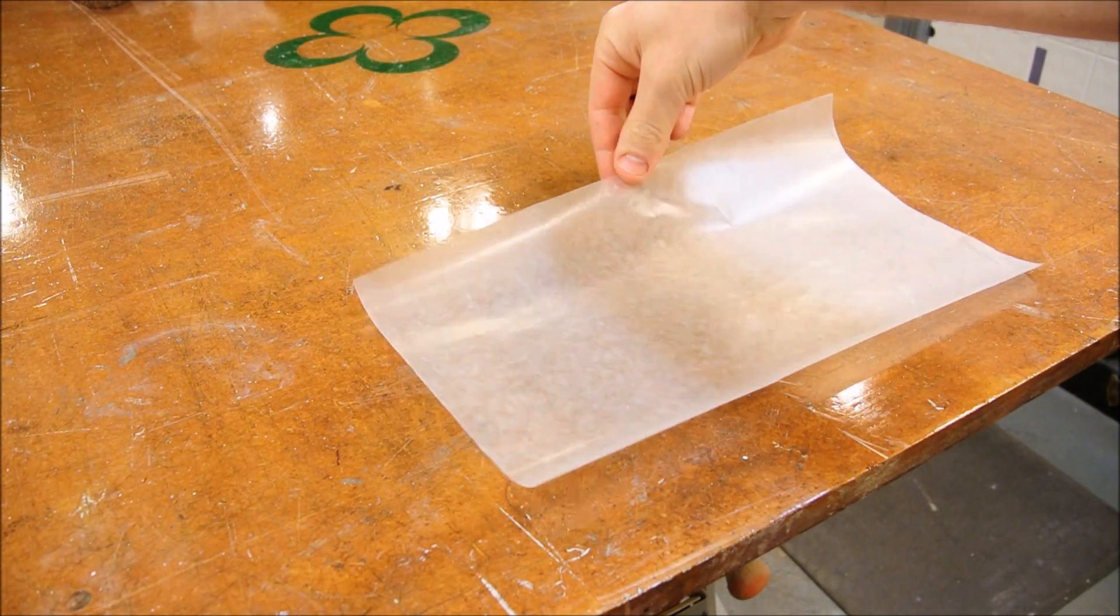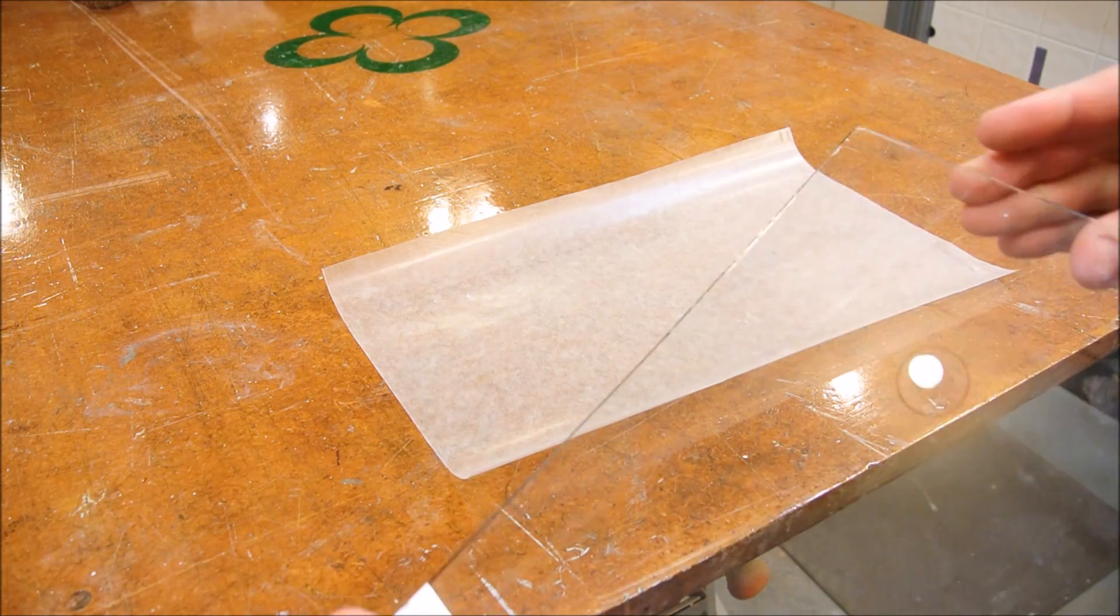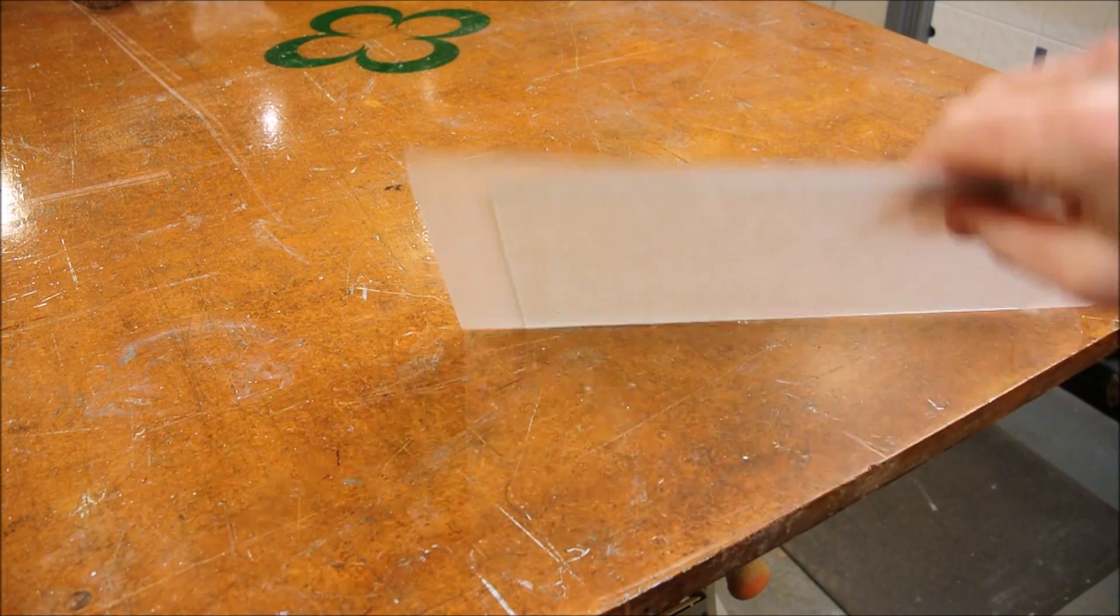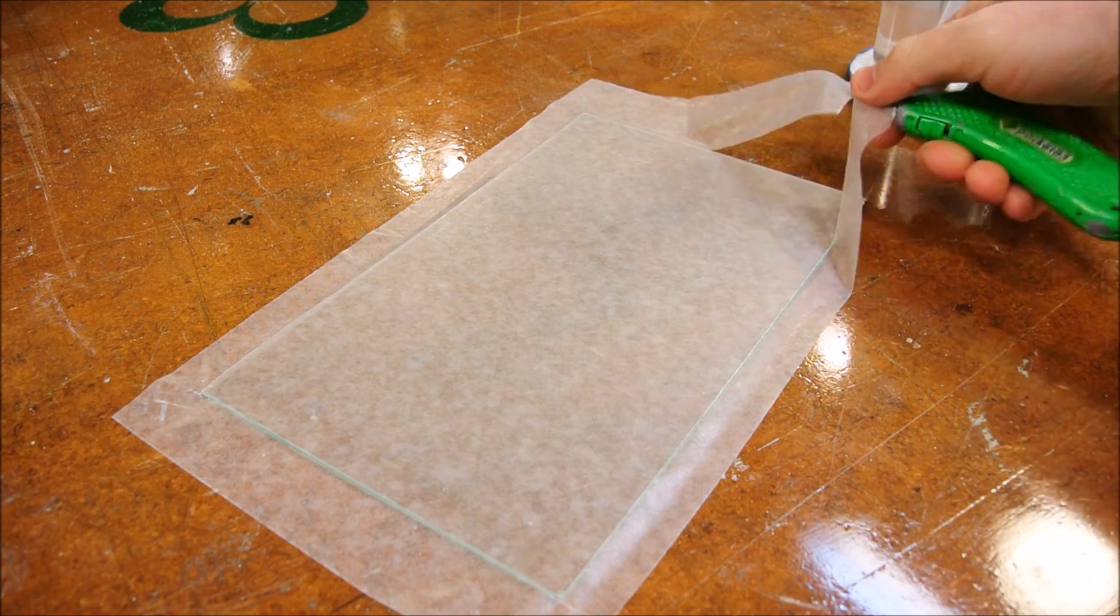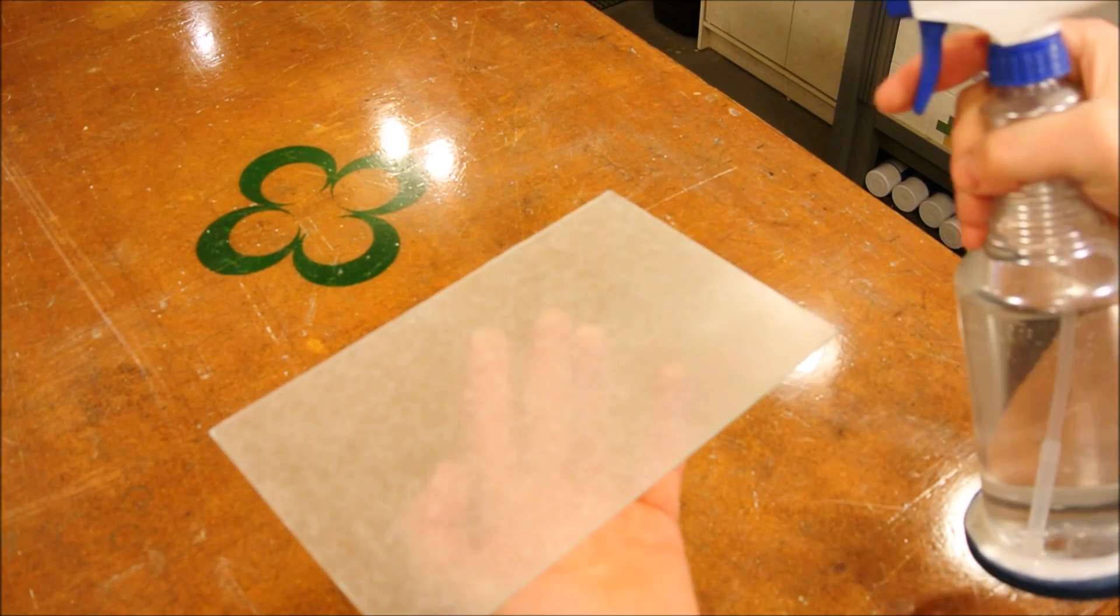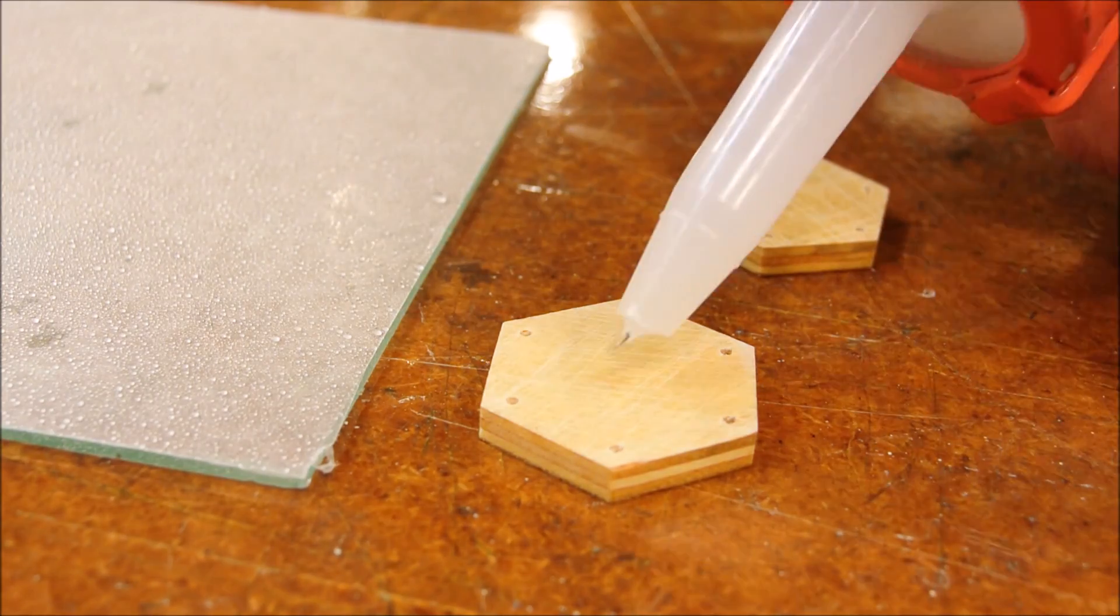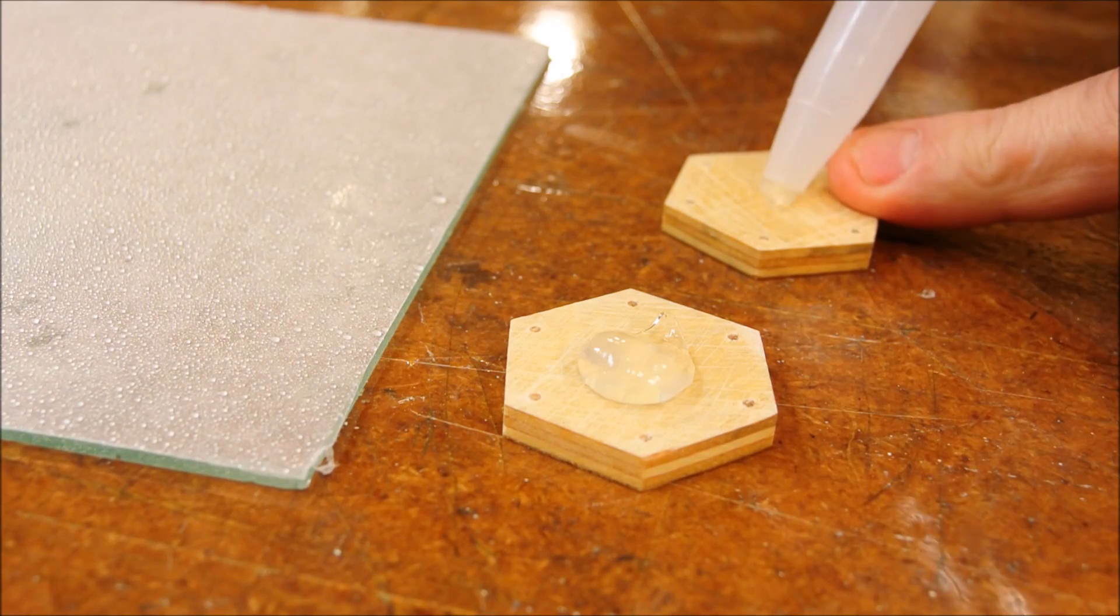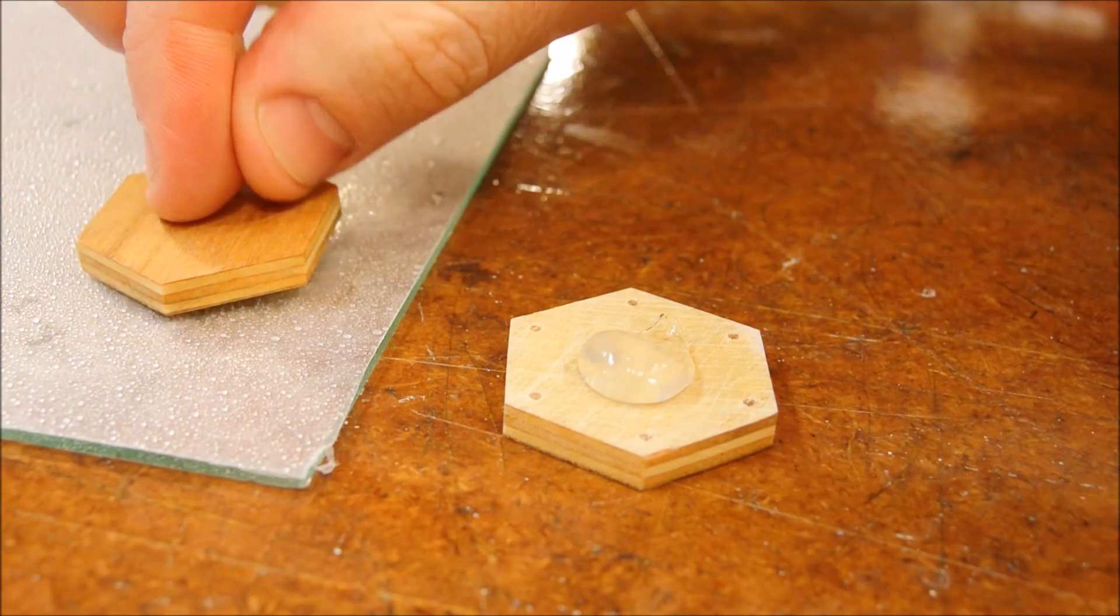Okay, next step. I've prepared a piece of wax paper by lightly coating one side with spray adhesive. And this is a piece of very thin glass. Now, I'm just lightly misting the surface with regular tap water. Now, we give it just a little blob of silicone.